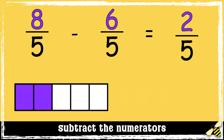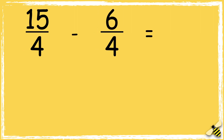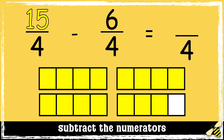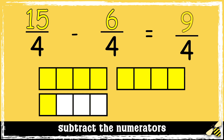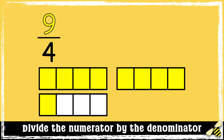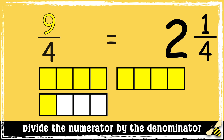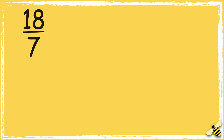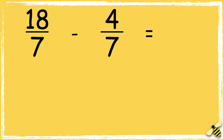So the answer is two fifths. Let's have a look at another one: fifteen quarters take away six quarters. We subtract the numerators — fifteen take away six equals nine. Now we have an improper fraction, so we need to convert it to a mixed number. We have two wholes and one quarter left over, so the answer is two and one quarter.